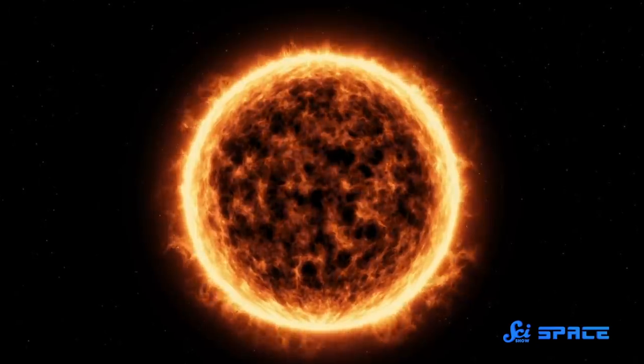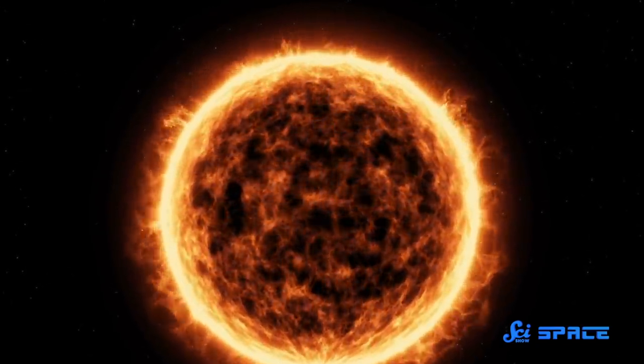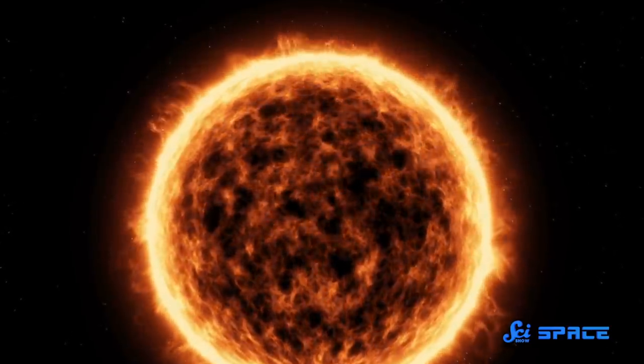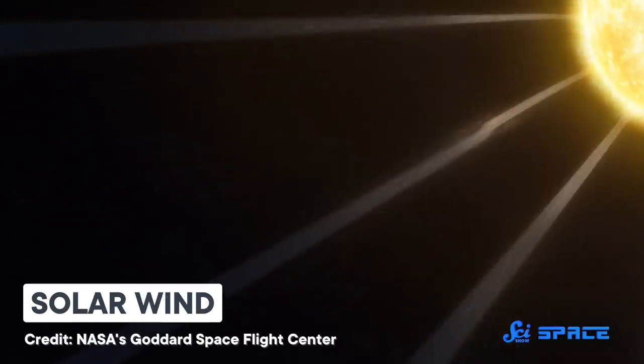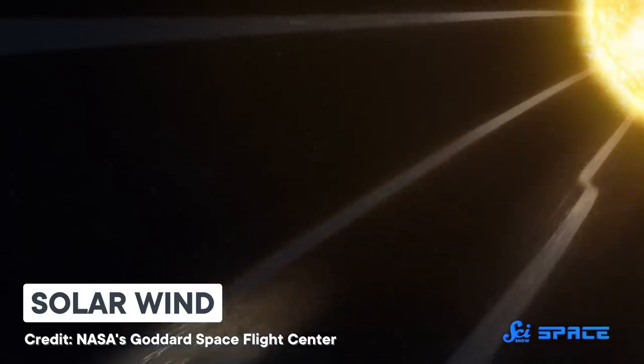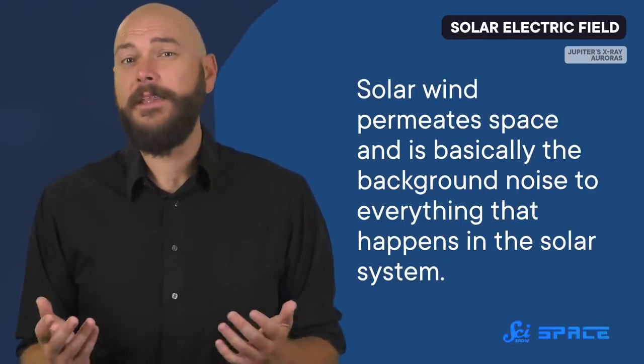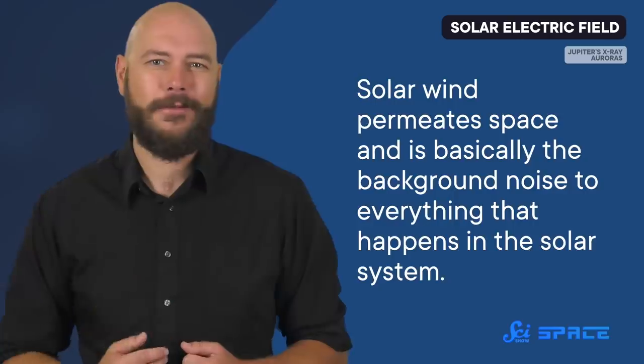The Sun shapes the solar system in a lot of ways, including through its light, heat, and gravity. But one of the less obvious ways it affects things is through its solar wind, a tidal wave of electrically charged particles constantly streaming out of our star. This wind permeates space, and is basically the background noise to everything that happens in the solar system. Which is why it's kind of a problem that scientists still don't have a detailed understanding of how it forms. And one of the biggest unknowns is the role of the Sun's electric field.